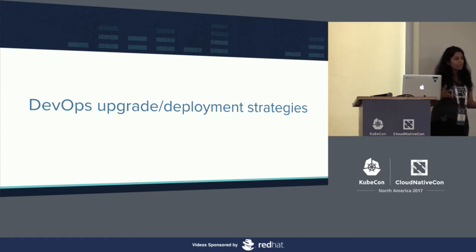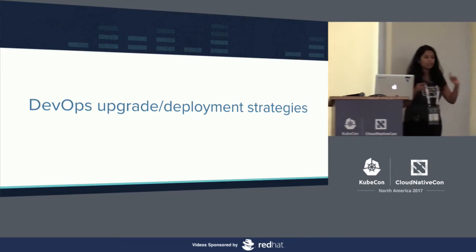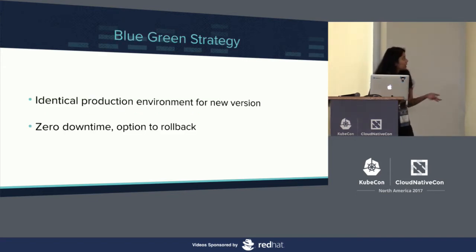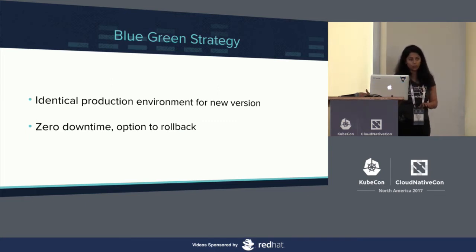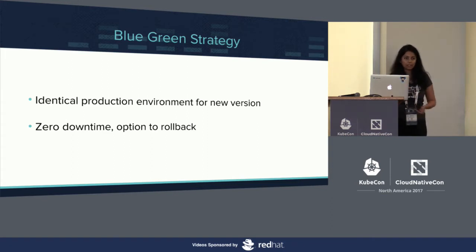In DevOps, there are various strategies to update your app, and they are referred to as upgrade or deployment strategies. We need to choose one of these strategies, so let's take a look at some of them. The first one is the blue-green strategy. If you want to update your app to a newer version, you have to bring up an identical production environment for the new version of your code. Once this new environment works as expected, you can just get rid of the older one. This strategy guarantees zero downtime during the update, and it also provides a way to roll back.